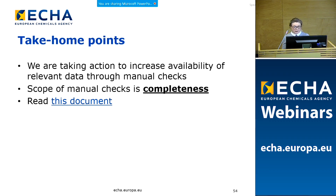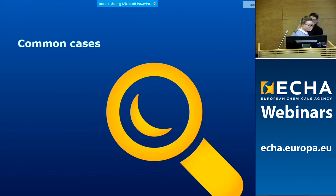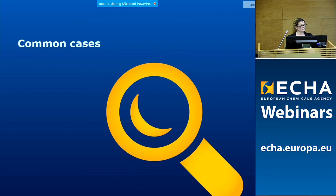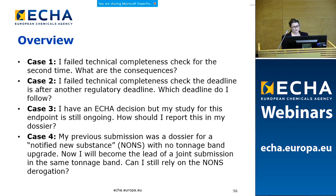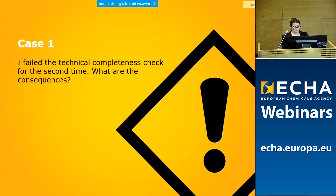To wrap up key points regarding the manual checks: the aim is to increase the availability of relevant data provided in dossiers. The scope of the manual checks is completeness, not the quality or compliance of the dossier. Please familiarize yourself with the document available on the ECHA website under support and manuals. Now I would like to welcome my colleague Tifan, who will walk you through some common cases as well as the extensive support available through ECHA. Thank you, Essie. I'm Tifan and I'm going to present some common cases reported to us by industry, and we will look at the different options of support offered by ECHA to ensure successful submissions.